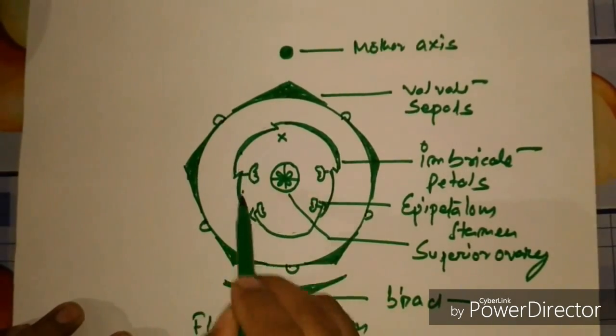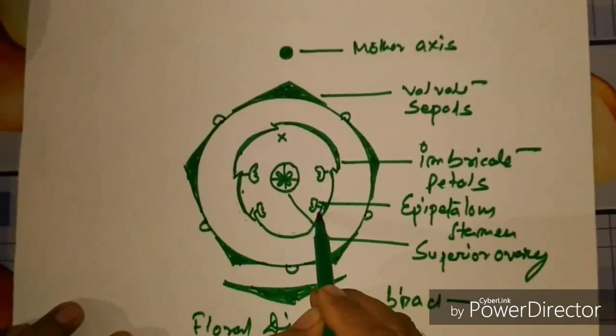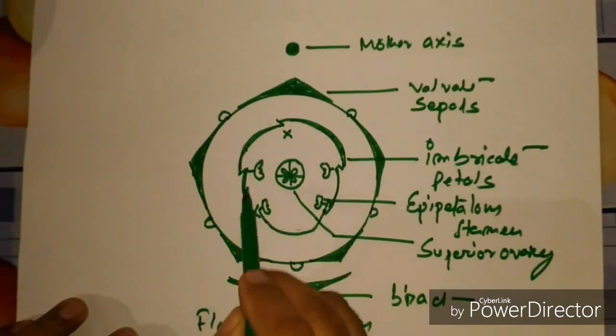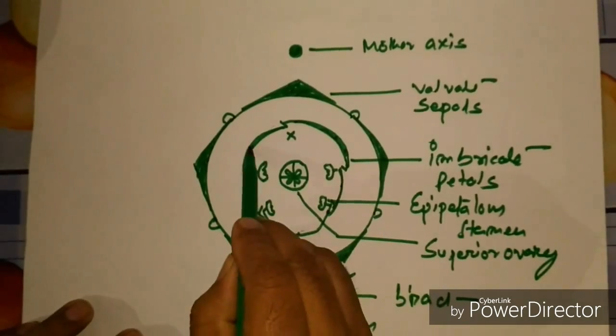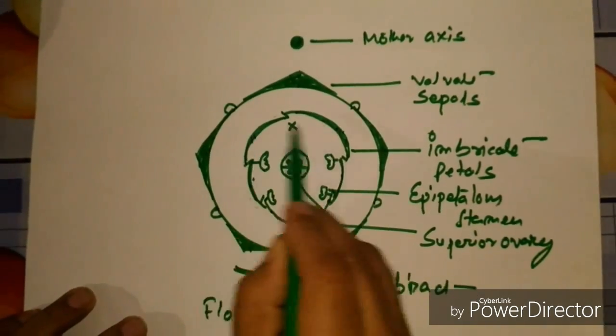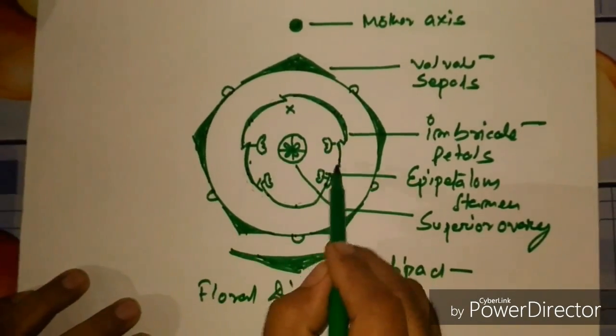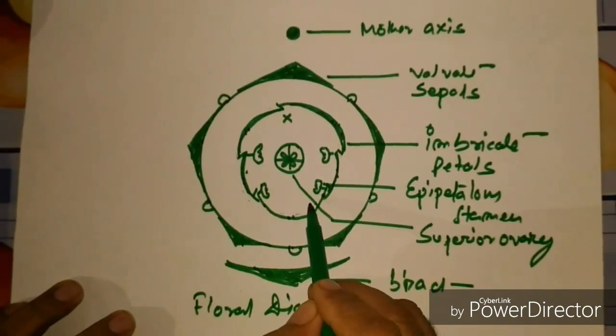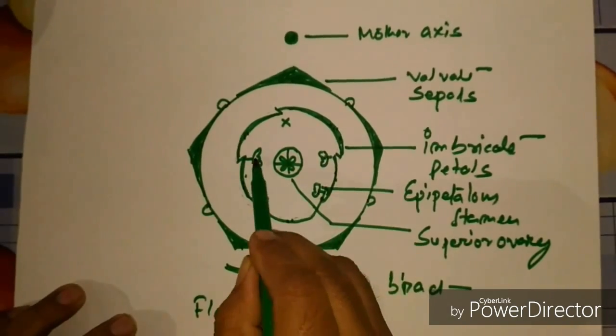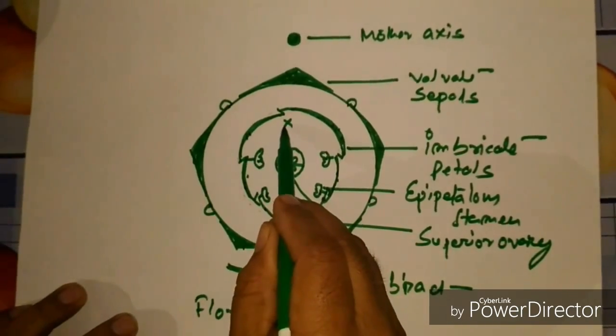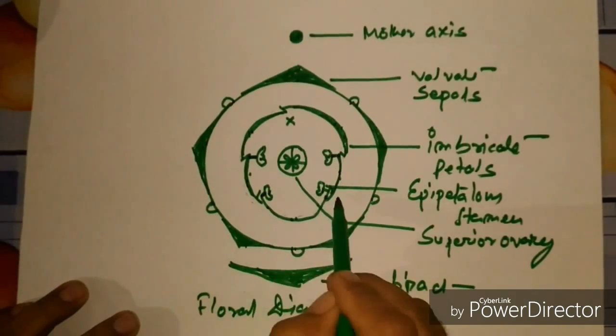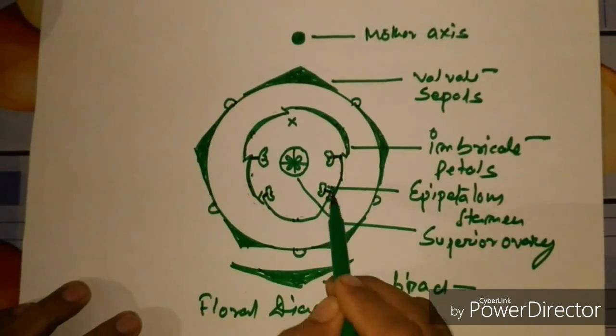And these are the imbricate petals. And number is one, two, three, four, five. These two comprise the upper lip and these three they comprise the lower lip. And regarding the number of stamens, the number of stamens is one, two, three, four. The fifth one is absent and they are attached to the petal hence epipetalous.